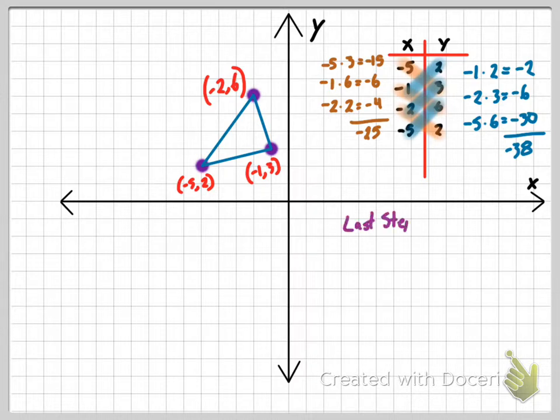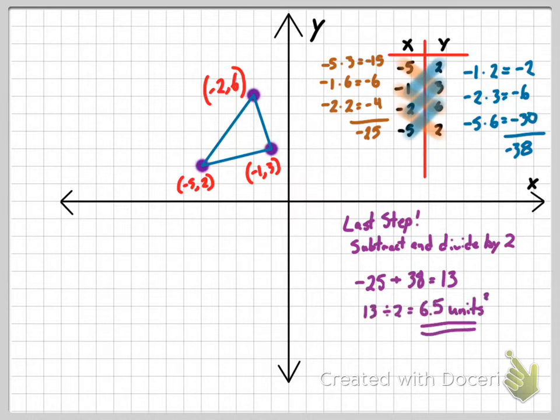Now, your final step is you have to subtract these two sum products from each other and divide by 2. And what do I mean? Well, negative 25 minus negative 38 equals positive 13. Hold on. Wait a minute. So remember, when you have negative 25 minus negative 38, remember when you're subtracting a negative, it's that keep, change, change that some of you probably learned. So this becomes a positive. So you're giving me positive 13. And then I divide by 2, which is 6 and a half units.